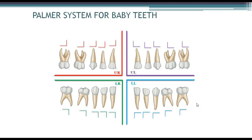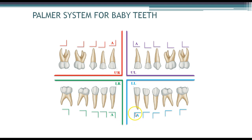For children we use the letter system — not numbers. We start in the middle with the central incisor as A, and then our second molars will be E. All the central incisors across quadrants will be A. It can get a little confusing if you see the same letters without knowing which quadrant they belong to, but that's where the shapes come into play. You'll have your L shape on the upper left, the backwards L on the upper right, and the same on the bottom quadrants. The main thing with the Palmer Charting System is to pay attention to the shape associated with the letter or number.